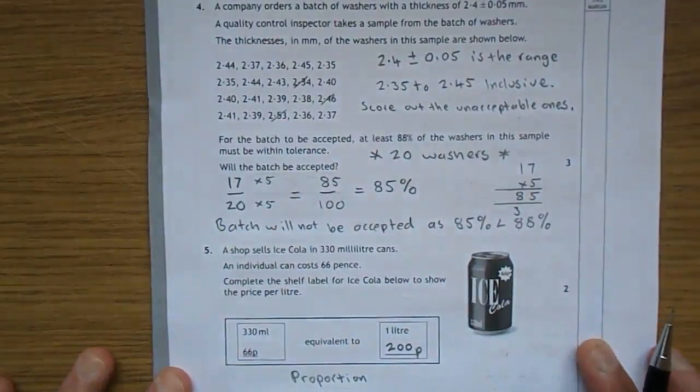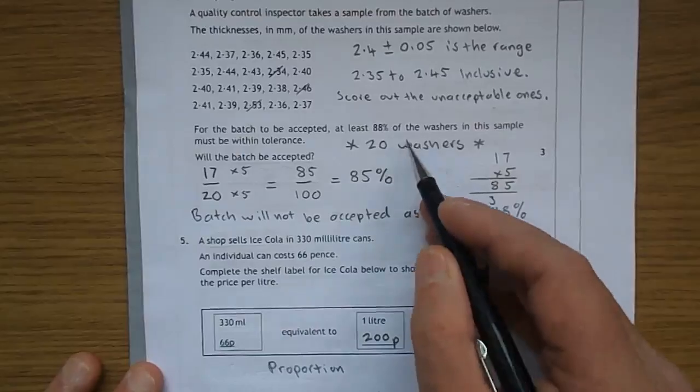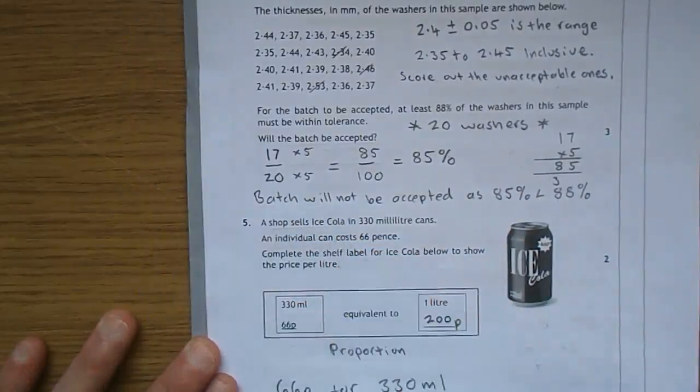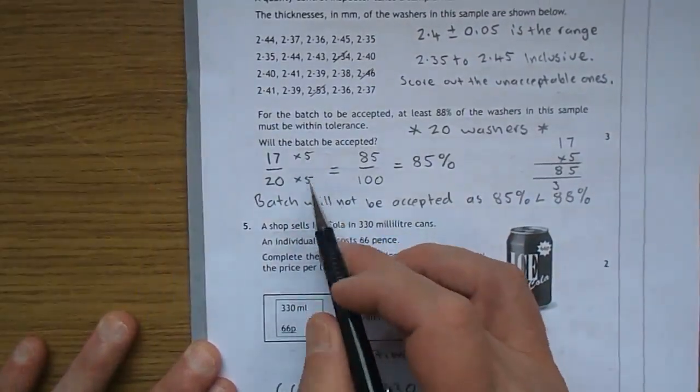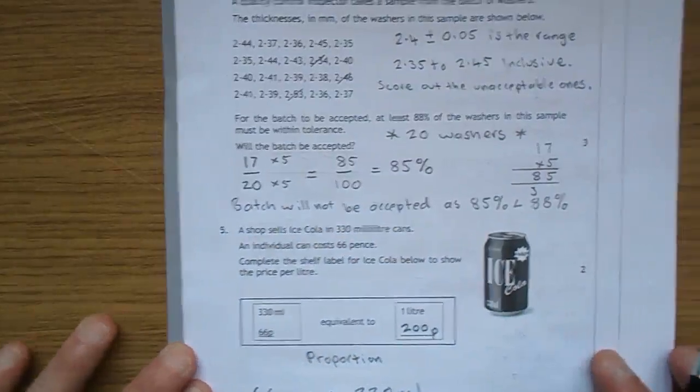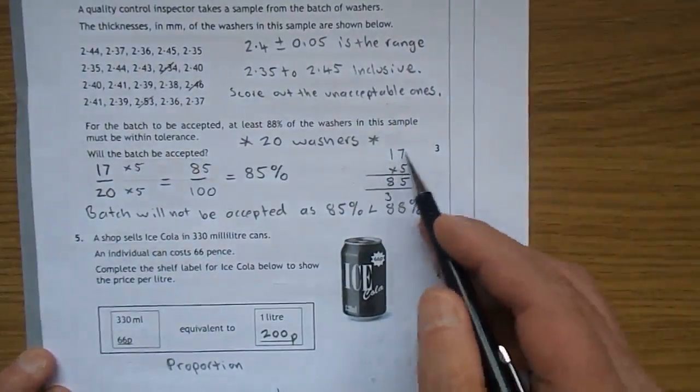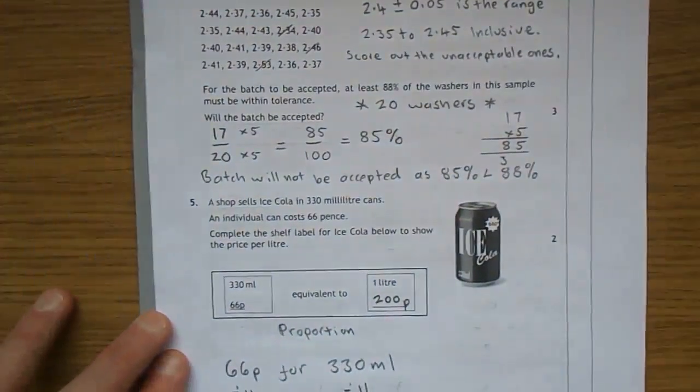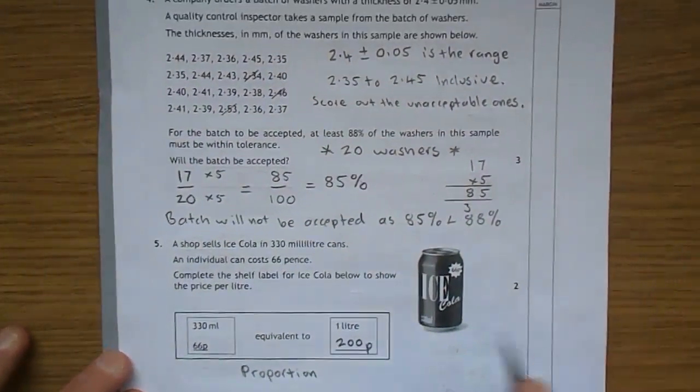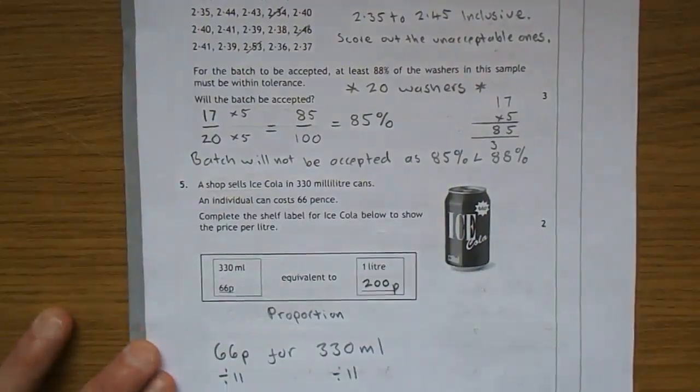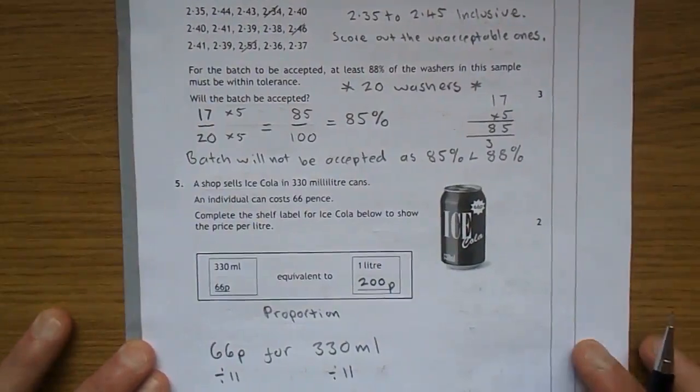For a batch to be accepted, at least 88% of the washers have to be within tolerance. Here's me just reminding myself that there's 20 washers. Well, 17 out of the 20 were okay, we only scored out 3. Times them top and bottom by 5, because we want to take the 20 to 100. 5 times 17 is 35, 5 times 10 is 50, add the 3. So that's 85%.